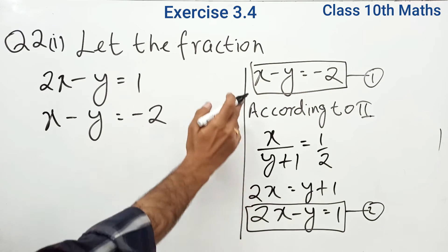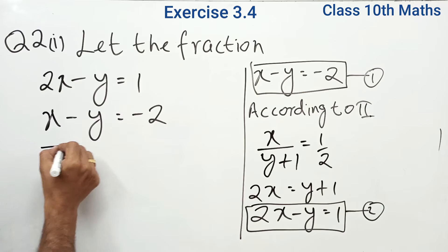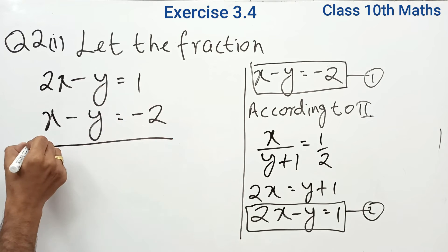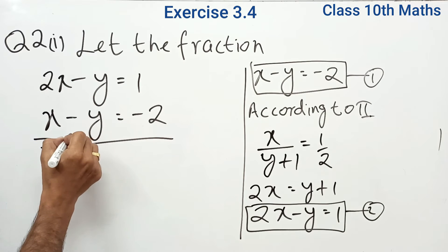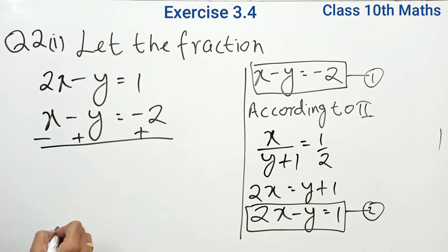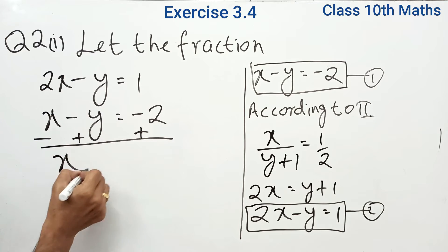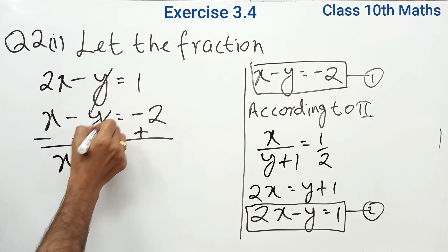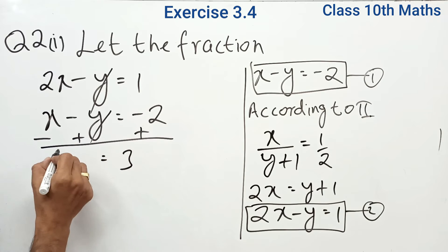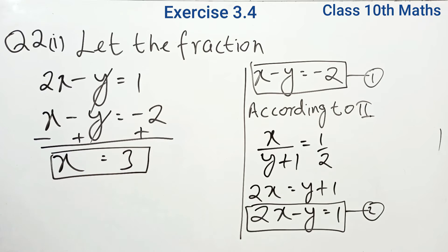Now both equations are written. We solve them using the elimination method as instructed. Subtracting the first equation from the second, the y terms cancel out with opposite signs. This gives us x is equal to 3.